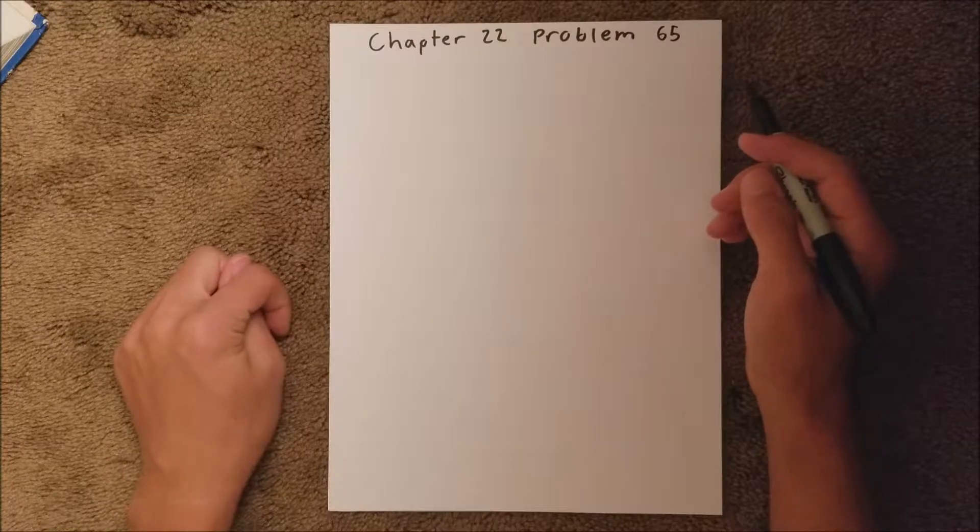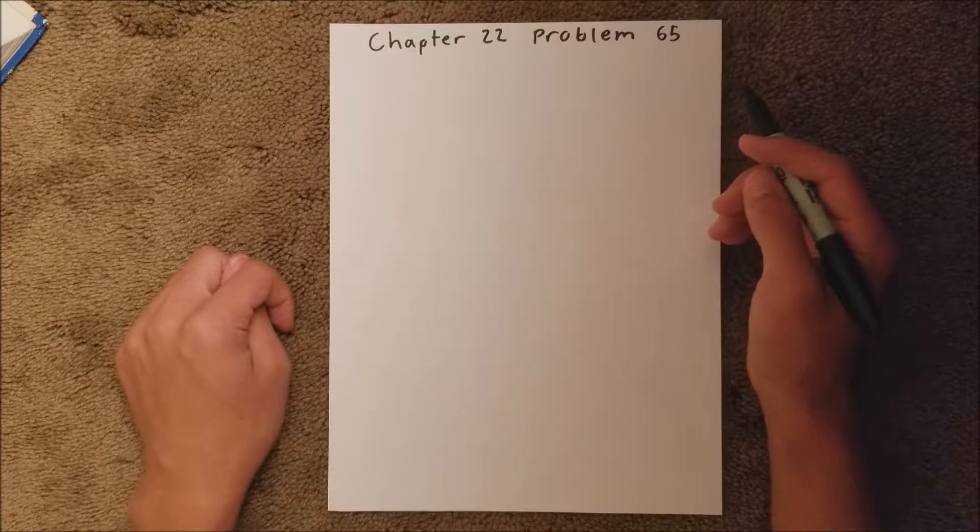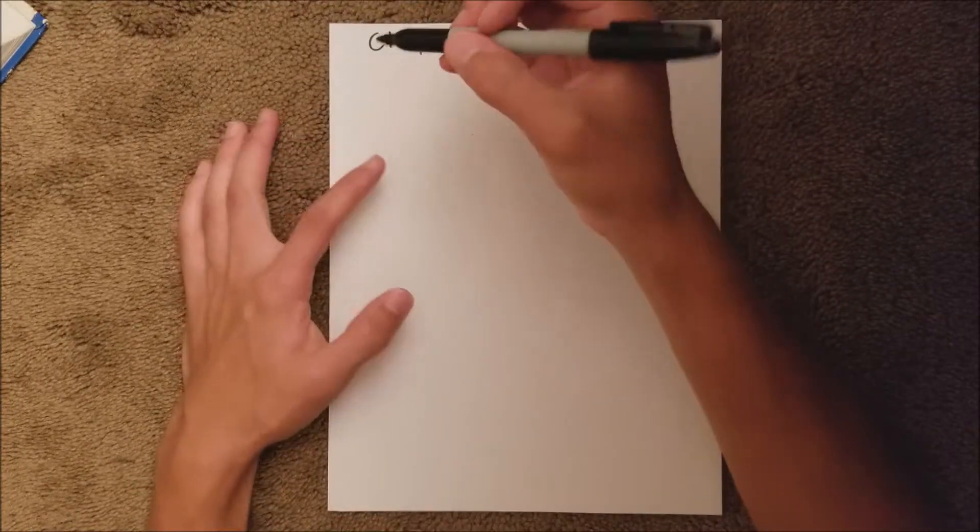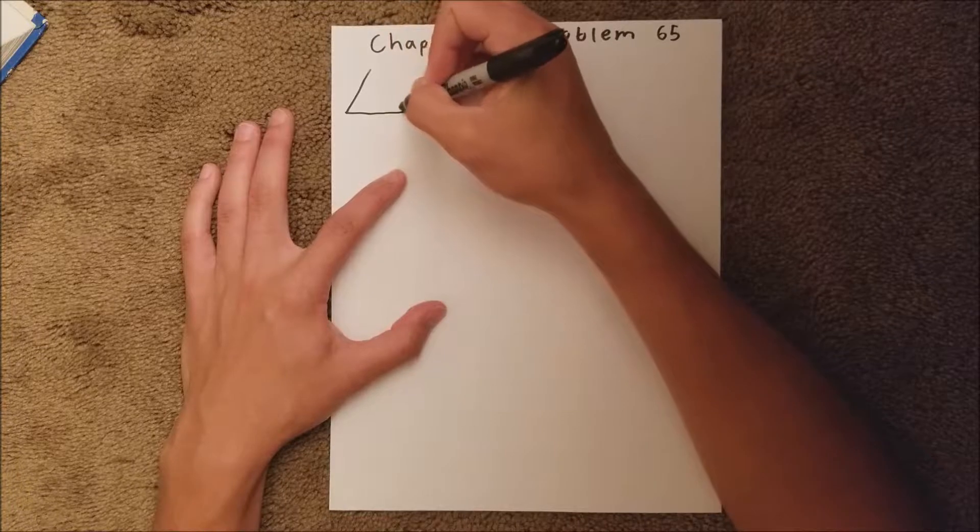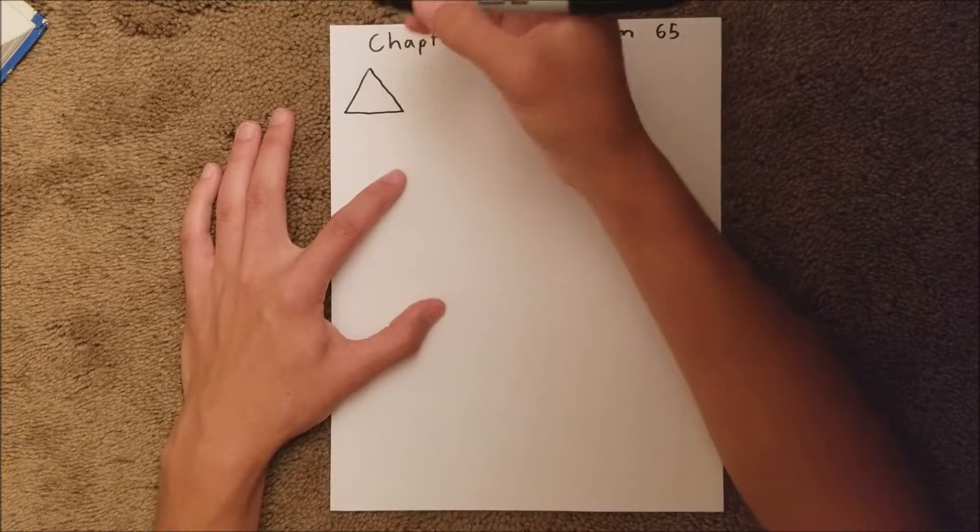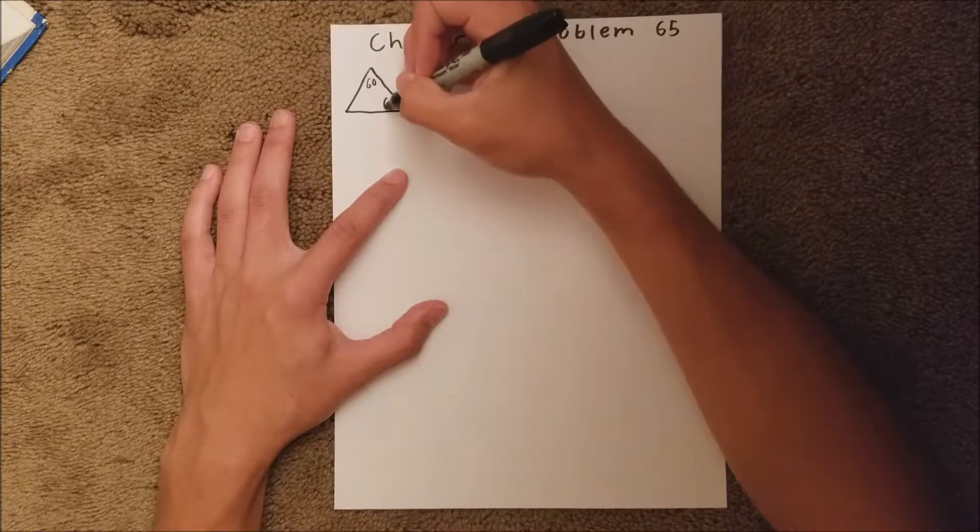Chapter 22 is all about electric fields, and Problem 65 talks about an equilateral triangle of charge. So an equilateral triangle, for those of you who don't know, is a triangle that has all equal sides and equal angles. So each angle is 60 degrees.